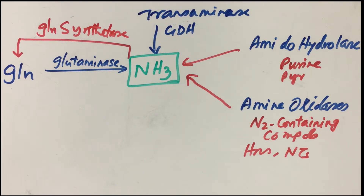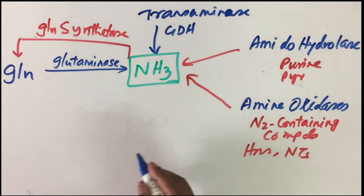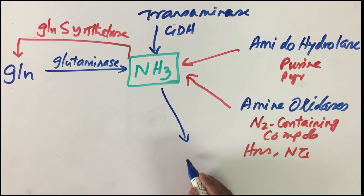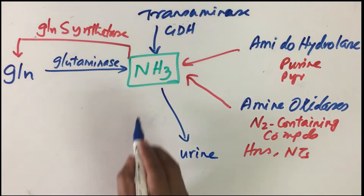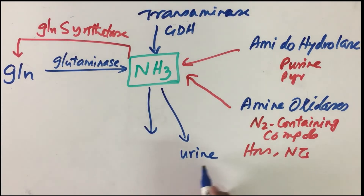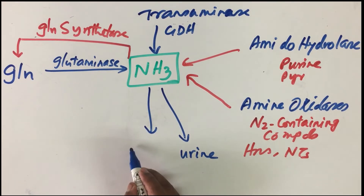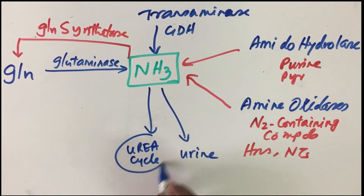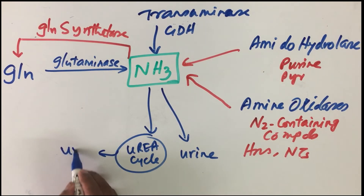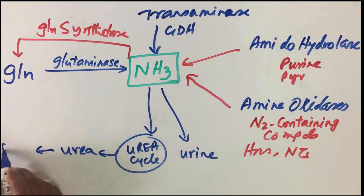Once this ammonia is formed, one possibility is that it can be excreted in urine. Another possibility is that it is used for maintaining acid-base balance. Yet another possibility is that it is used for the urea cycle, where urea is released and excreted in urine.